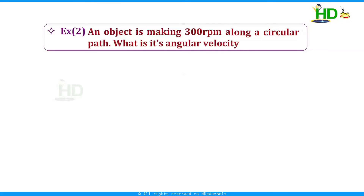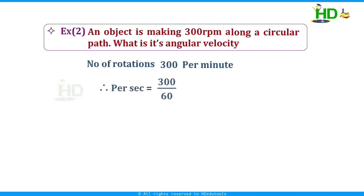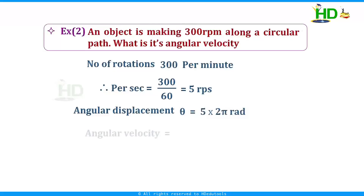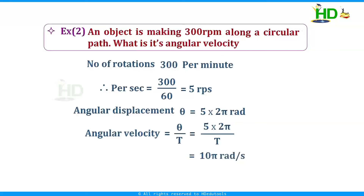Another problem: an object makes 300 rotations per minute along a circular path. What is its angular velocity? The number of rotations per second is 300 divided by 60, which is 5 rotations per second. For 1 rotation the angular displacement is 2π radians, so for 5 rotations it is 5 times 2π radians. Angular velocity omega equals theta by t, that is 5 times 2π divided by 1 second, giving 10π radians per second.